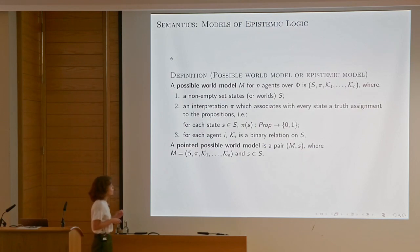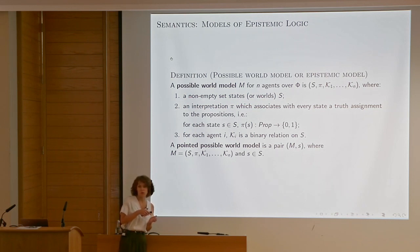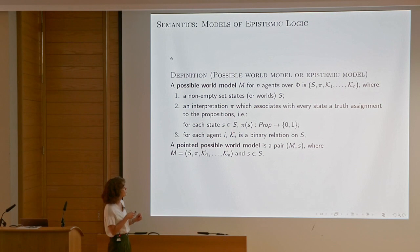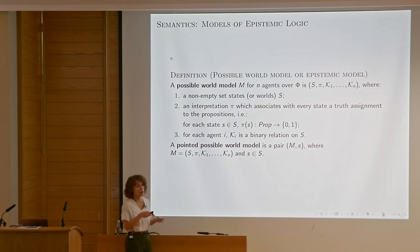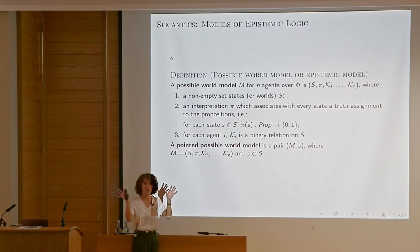A possible world model or epistemic model will be a set of points — states — and each state will make some propositions true and some false from some domain. Like we had the San Francisco and London example, we had certain facts true in some states and false in others. This φ-function interprets propositions to be true or false at states. And for each agent i, K_i is a binary relation between those states.